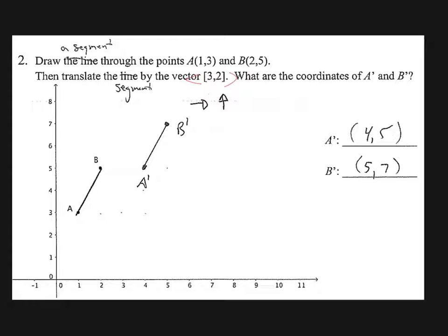So 1 plus 3 is 4, and 2 plus 3 is 5. Then I'm going to take the 2 and I'm going to add that to the y's respectively. So 3 plus 2 is 5, and 5 plus 2 is 7. So I'm going to plot my 2 new points here. So 4, 5 is 1, 2, 3, 4, up to 5. I plot A prime. I plot B prime, connect them with a nice straight edge, and we're done.